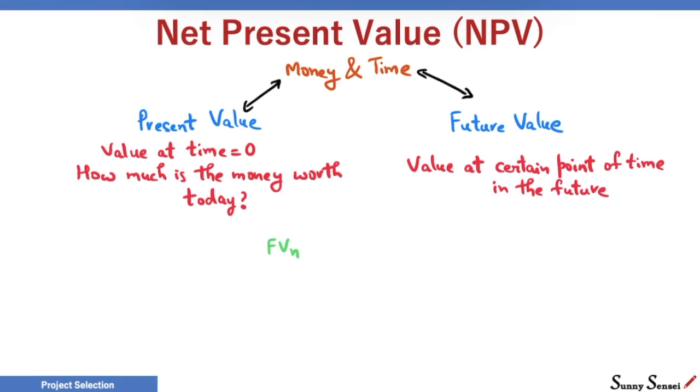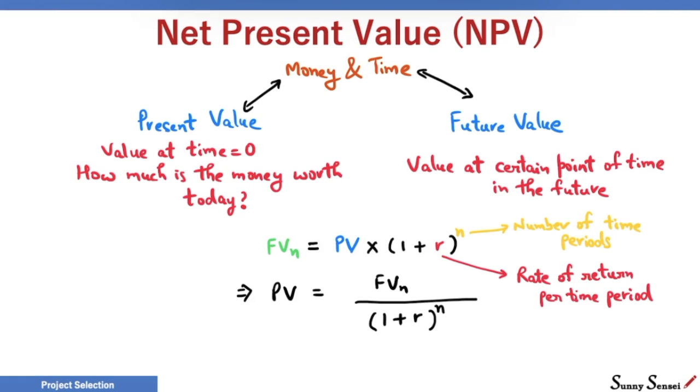Mathematically, N is the number of time periods, R is the rate of return per time period, FV sub N represents future value after N time periods, and PV is the present value. The concept of net present value is based on this formula.